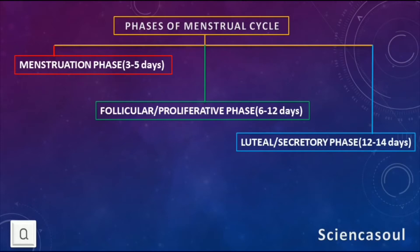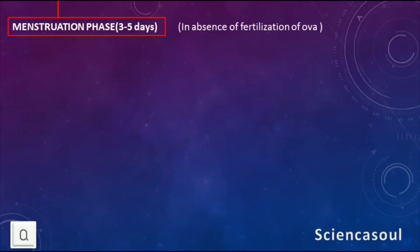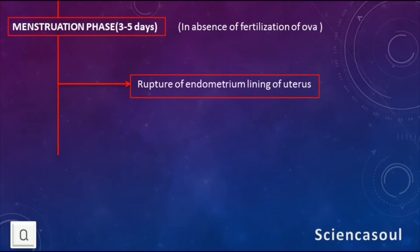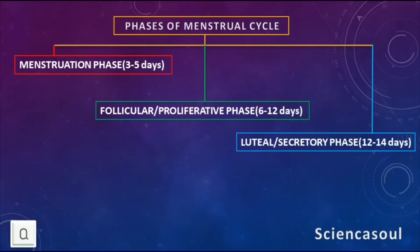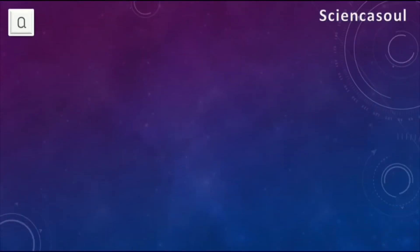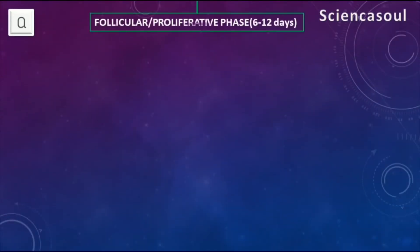The first phase is the menstruation phase, which lasts for three to five days. It happens in the absence of fertilization of the ovum. In this phase, rupture of the endometrium lining of the uterus occurs, which results in the release of blood, serous fluid, mucosa, and unfertilized ovum.